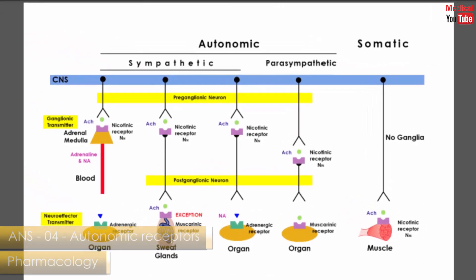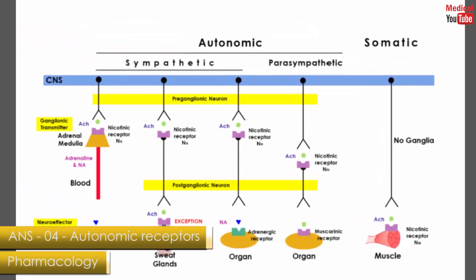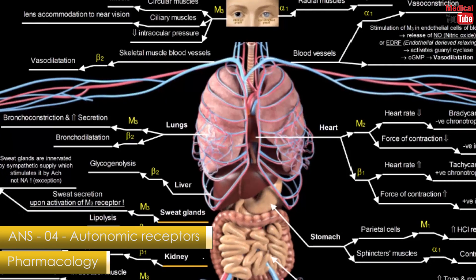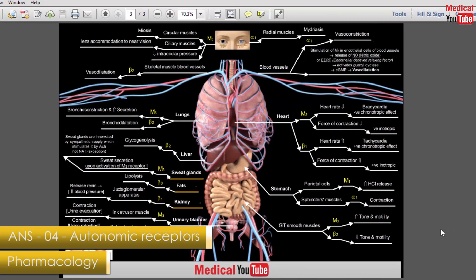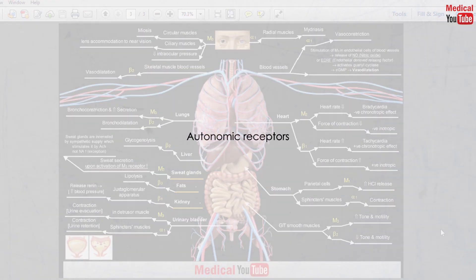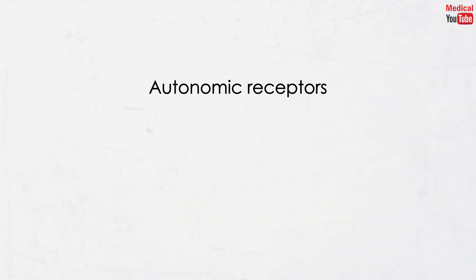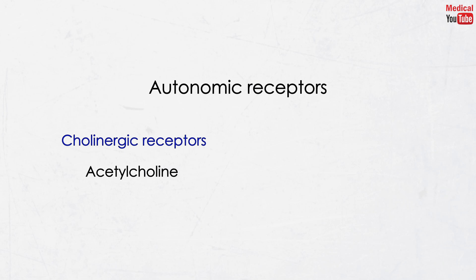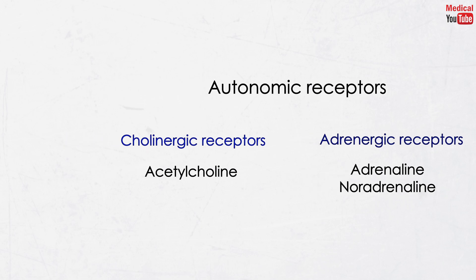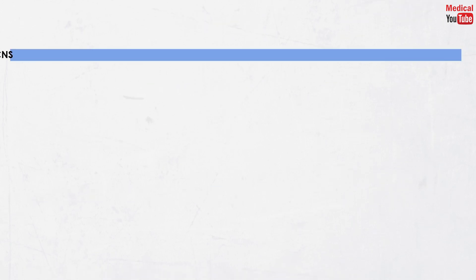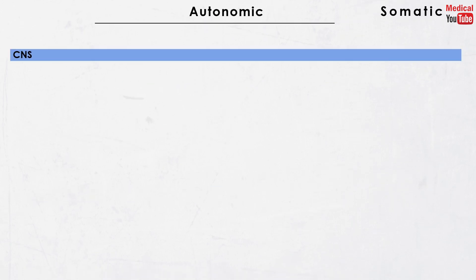In this lecture we will discuss briefly the autonomic receptors in the body and we will go deeper in the next lectures. Autonomic receptors are divided into two main categories: the cholinergic receptors that are activated by acetylcholine, and adrenergic receptors that are activated by adrenaline and noradrenaline. Cholinergic receptors are divided into nicotinic and muscarinic receptors.